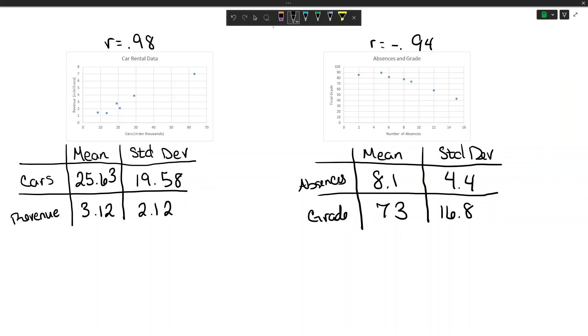Let's go back to the two examples I looked at in the previous video. I have my car rental data, and for this I gave the mean and standard deviation of each of the values.